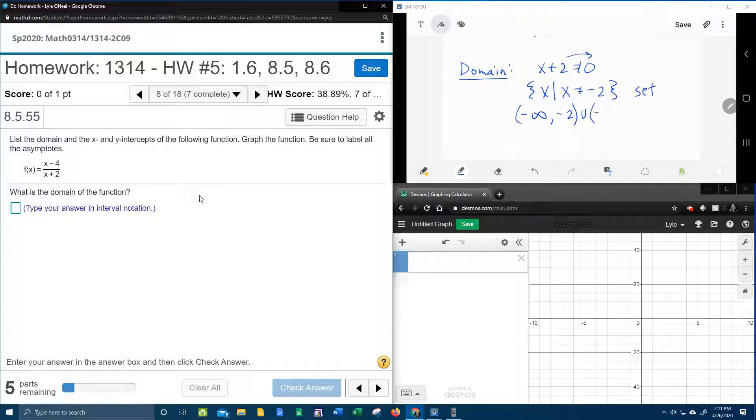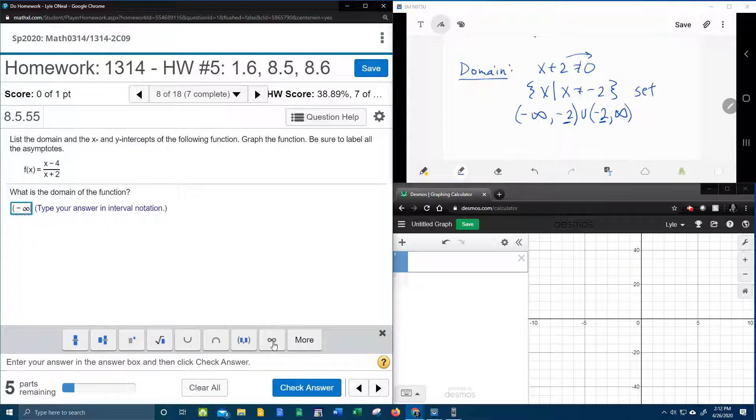skip over to the other side of negative 2 and keep going. So this notation here, this says everything from negative infinity to infinity. In other words, all real numbers except negative 2. And don't forget the u is the glue that sticks the two pieces together. Negative 2 to infinity.